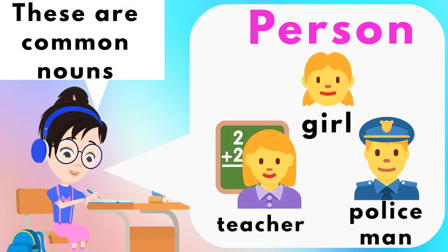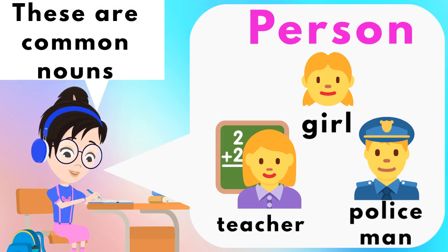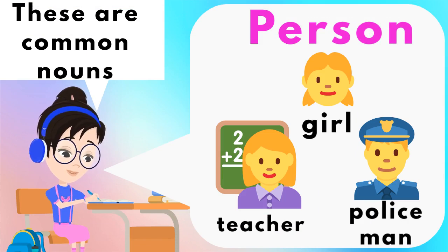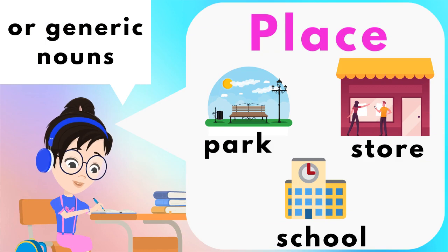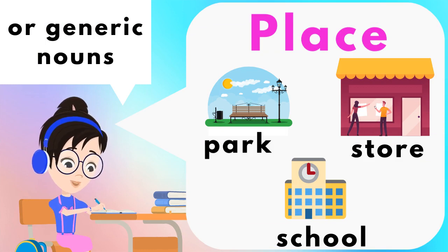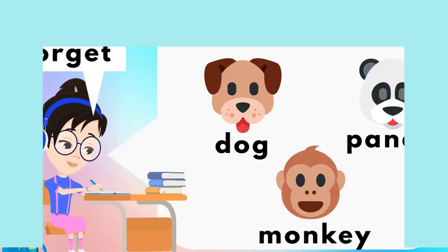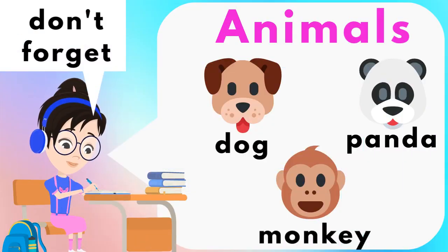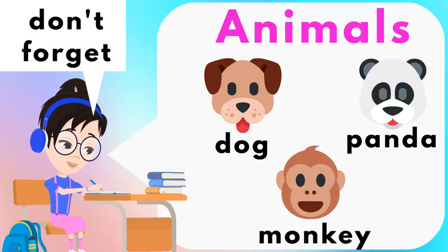These are common nouns. Person, such as girl, teacher, policeman, or generic nouns like place. For example, park, store, school. Don't forget, animals are nouns as well. Dog, panda, monkey.